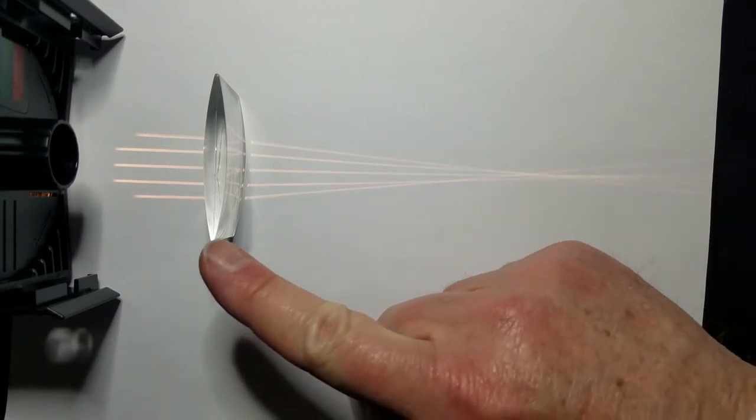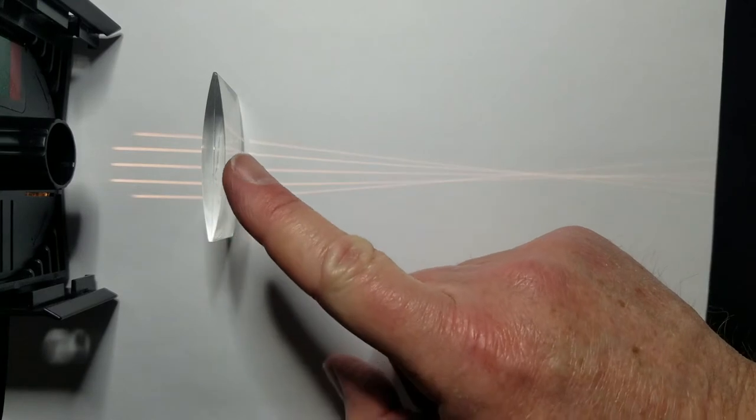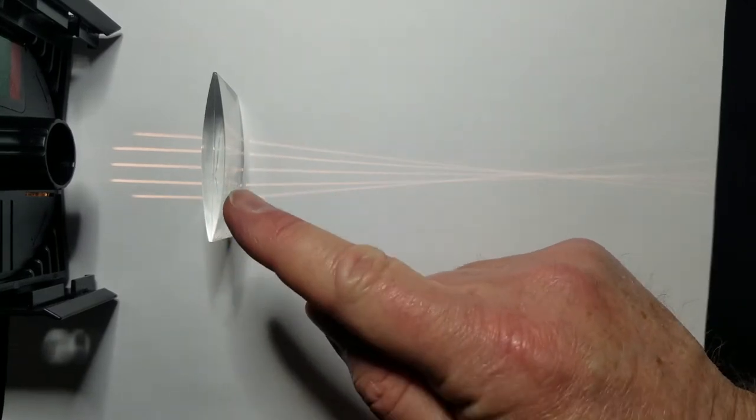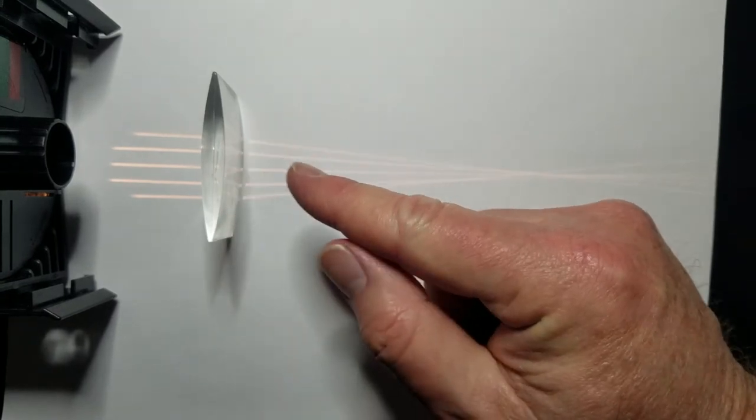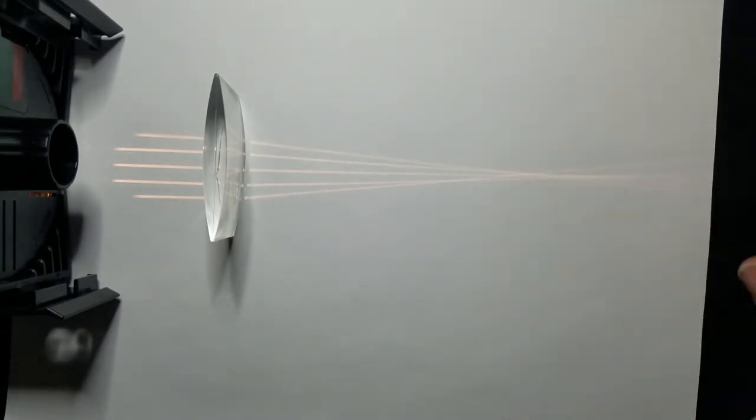That's because as light passes through this medium, it's going to bend towards the thicker part of the lens, and since the middle is the thicker part, all these beams on the edge will bend towards the center, and so that means they'll cross somewhere out here.